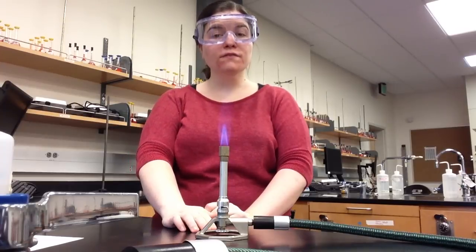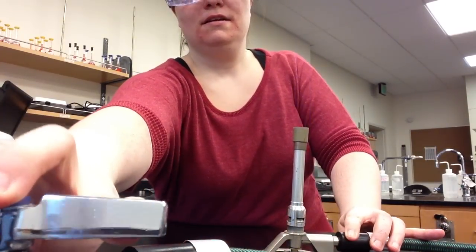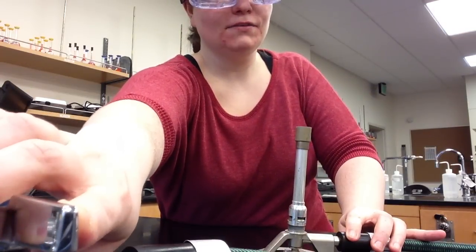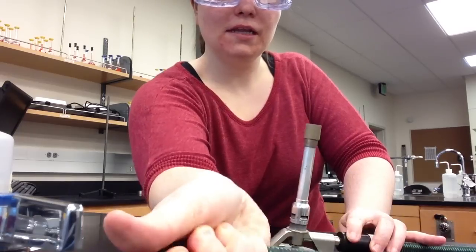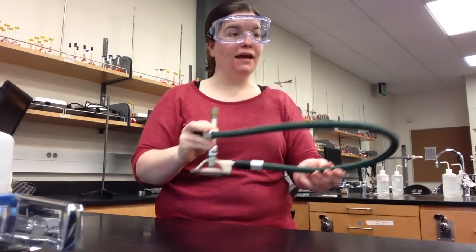Whenever I want to turn the Bunsen burner off, all I have to do is push the handle of the valve perpendicular to the valve in the closed position. I can then unplug the hose and put the Bunsen burner back in the cabinet where I found it at the end of the lab bench.